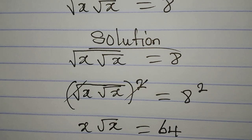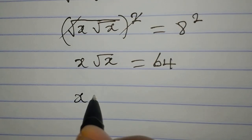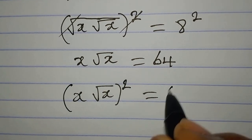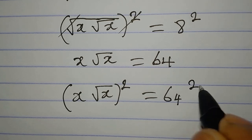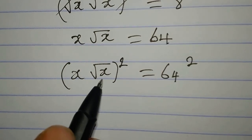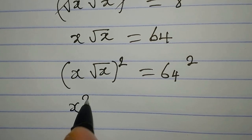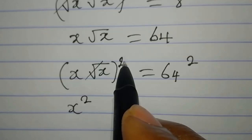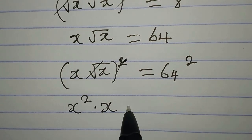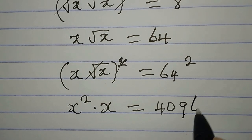We still have a square root to eliminate, so we are going to square this side as well — this will be squared — and then 64 will also be squared. Now this square applies to x and root x, so x squared will give us x to the power of 2, and we multiply that by x.